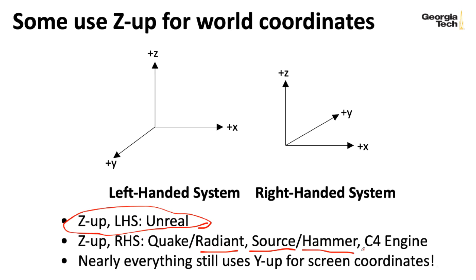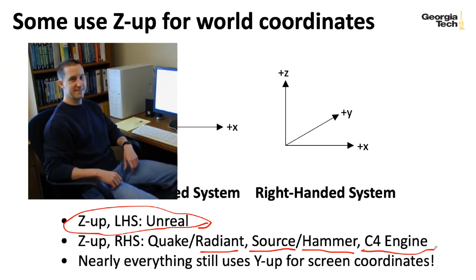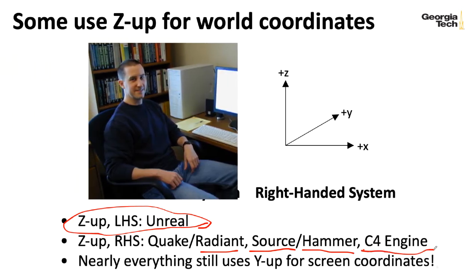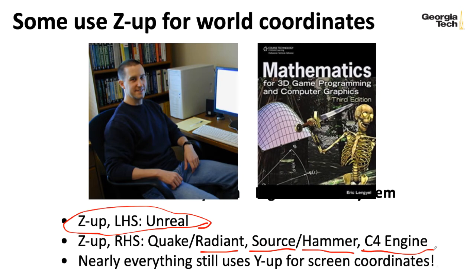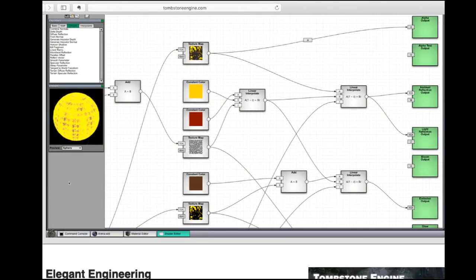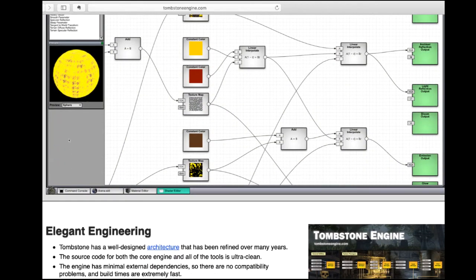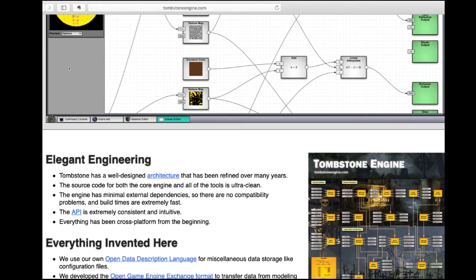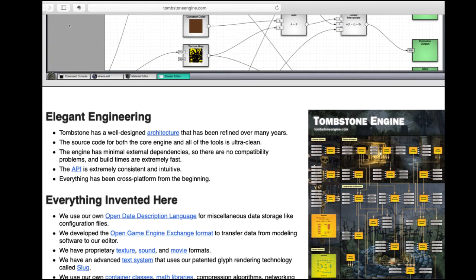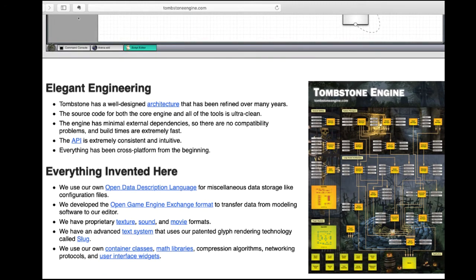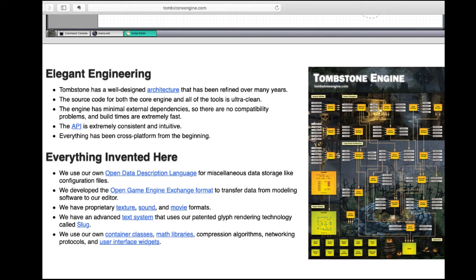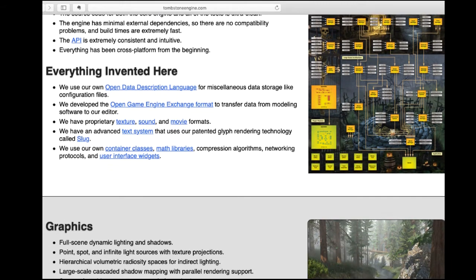This kind of system is also used by the C4 engine, developed by Eric Lingle. Eric wrote an excellent book called Mathematics of 3D Computer Graphics. The latest version of the C4 engine is actually known as the Tombstone engine — it's a lesser-known engine but has an interesting, clean architecture worth checking out.